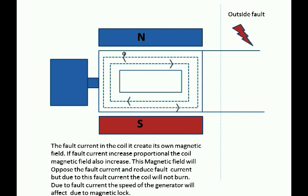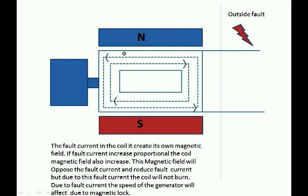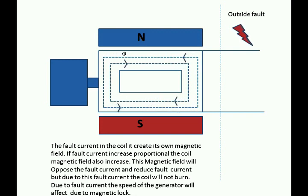When a coil produces EMF in a generator, while current flows on a coil, the current flow will make the coil magnetic field. This magnetic field will try to attract the excitation coil magnetic field, so the speed reduces normally. If the fault current is assumed outside of the generator, the current magnitude increases. The increase in current will make a high magnitude field in the core. This core will produce the back EMF, which directly opposes the main EMF.